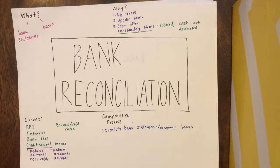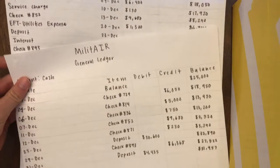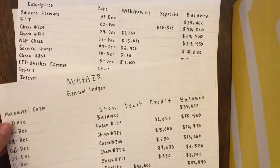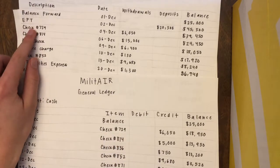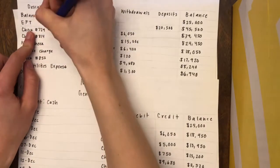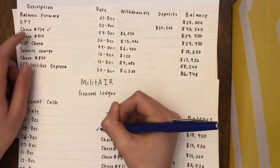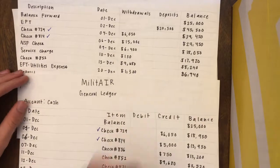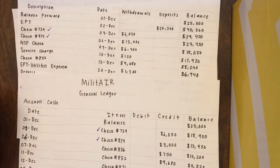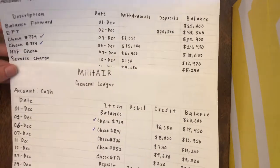The next step is to check off similar items. Between the bank statement and the general ledger, we can see that check number 729 and check number 814 appear on both statements, so we can check those off. There are a few others as well that you can check off.